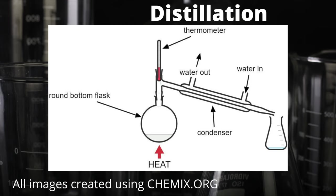Now this type of apparatus is particularly important — it's an example of a distillation. This could be used either for causing a primary alcohol to become an aldehyde in an oxidation reaction using acidified potassium dichromate, or it could be used in the purification of organic liquids where we could do a redistillation to purify our sample. The distillation apparatus can be described as a heating method where any of the vapour products released in the reaction are cooled, condensed and collected immediately via the conical flask on the right.